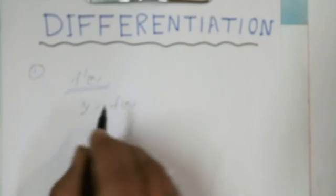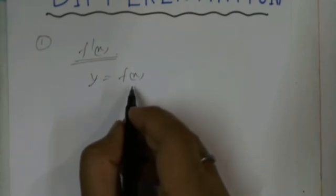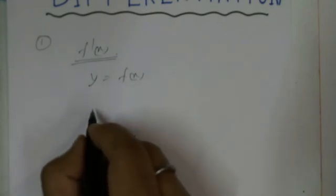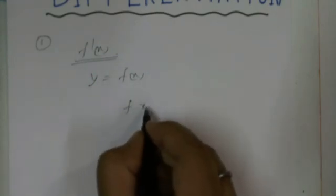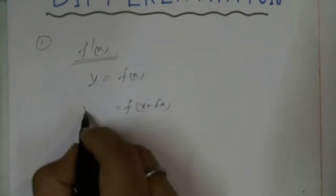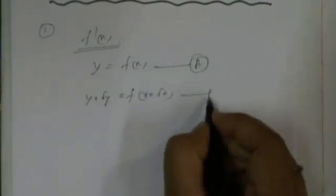Take y = f(x). If there is a slight, very very small change of x — denote it as delta x — then y becomes f(x + delta x). And a small amount of change also occurs in y, that is y + delta y. Call this function (a) and this function (b).